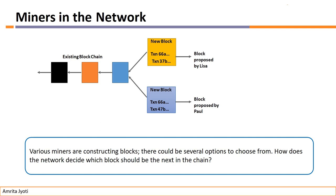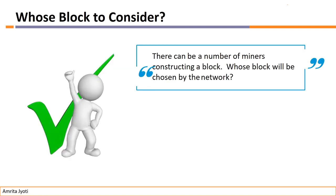There are many methods for this. The most important method, generally used by Bitcoin, Ethereum, and Hyperledger, is Proof of Work. Proof of Work is a method for choosing which miner's block to select when many miners are creating blocks simultaneously. Different methods exist: Proof of Work, Proof of Stake, Elapsed Time, PBFT — but generally Bitcoin and Ethereum use Proof of Work.